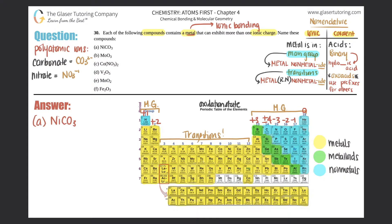Looking at our compound, we have nickel, which is a transition metal. So I won't know its charge specifically from a trend. For transition metals we always state the metal name, give it a Roman numeral, and the non-metal gets the -ide ending. The Roman numeral always stands for the oxidation state — the charge of the metal — not how many of the metal you have. That's going to be super important.